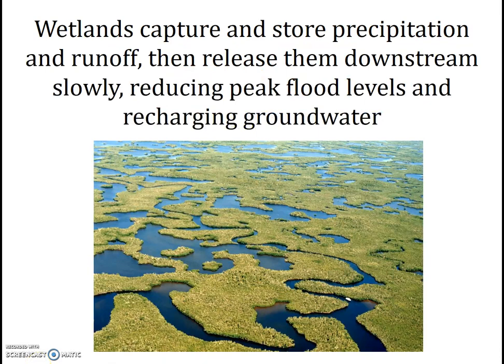So how do wetlands control flooding? In general, wetlands, including the Everglades, capture and store rainfall and runoff, and then release the water slowly, reducing peak flood levels and also recharging groundwater resources. It's not just the Everglades wetlands that provide these services. Locally, our coastal wetlands and riparian zone wetlands also provide flood control. As climate change progresses and ocean levels rise, our coastal wetlands are increasingly important for flood control, and all the local communities around the Bay could benefit from wetland restoration and protection — and when I say benefit, I mean dollar values, as these wetlands can protect us from expensive flooding.